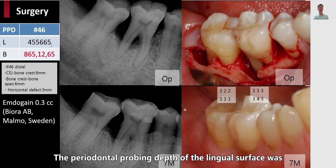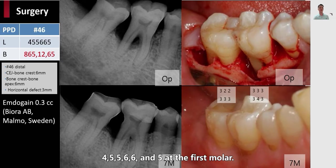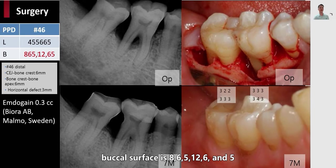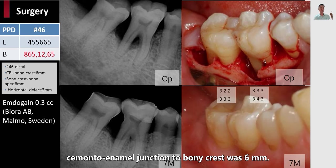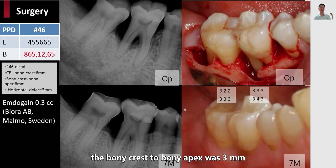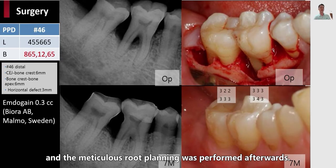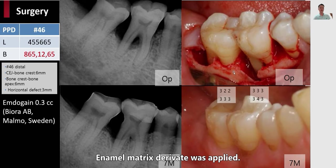The periodontal probing depth of the lingual surface was 4, 5, 5, 6, 6, and 5 for the first molar. The periodontal probing depth of the lingual surface for the second molar was 8, 6, 5, 12, 6, and 5. The distance between the cemento-enamel junction to bony crest was 6 millimeters. The distance between bony crest to bony apex was 3 millimeters. The horizontal defect was 3 millimeters. Granulation tissues were removed and meticulous root planing was performed. Enamel matrix derivative was applied; no bone graft particle was used in this case.